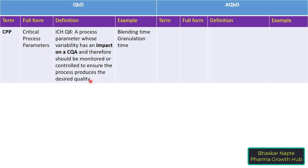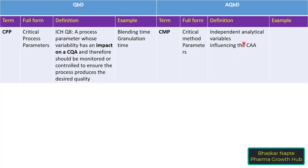The equivalent term in AQBD for CPP is CMP, or Critical Method Parameters. These are independent analytical variables influencing the critical analytical attributes such as retention time and resolution. Examples of critical method parameters include mobile phase composition, pH of the mobile phase, buffer strength, flow rate, and injection volume — all of which can certainly influence the CAA.